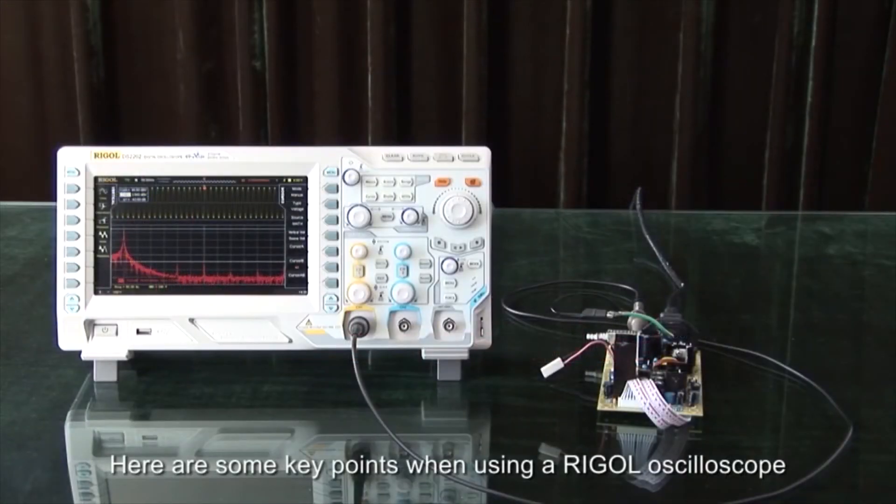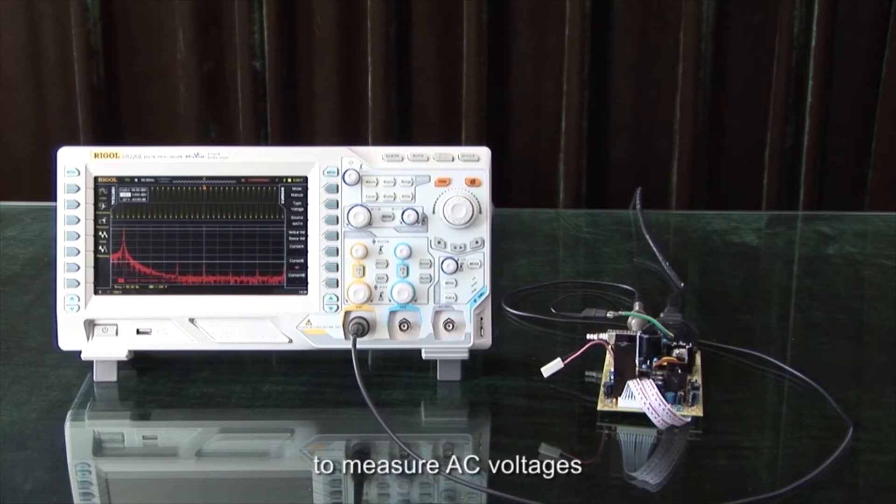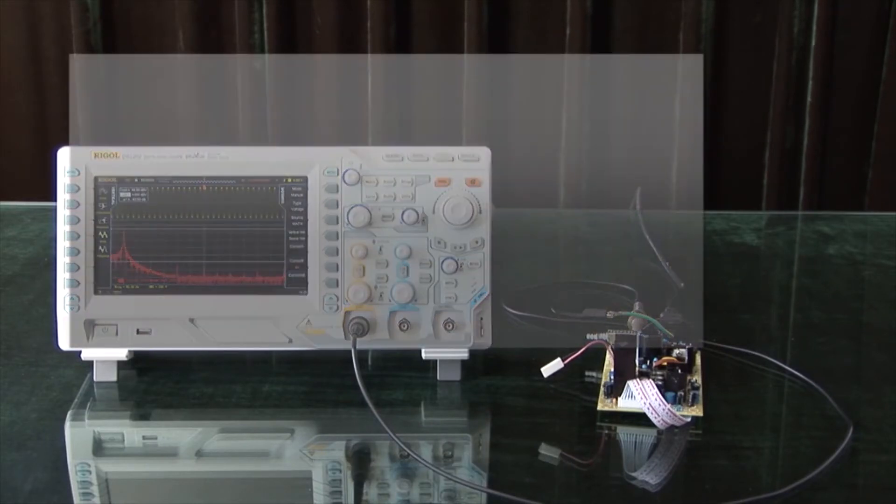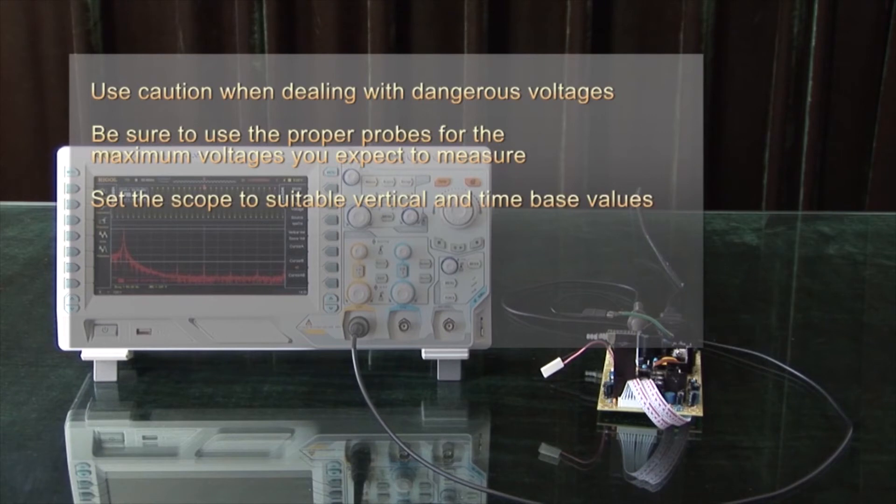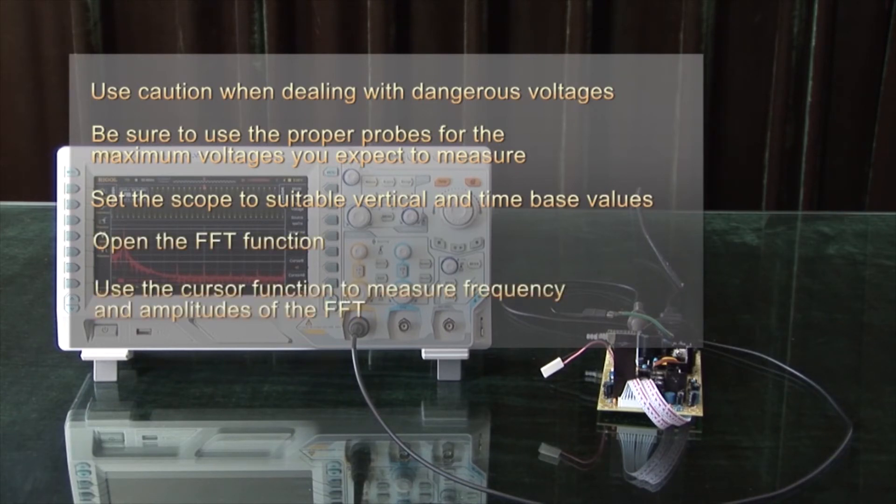Here are some key points when using a Rigol oscilloscope to measure AC voltages. Use caution when dealing with dangerous voltage. Be sure to use the proper probes for the maximum voltages you expect to measure. Set the scope to suitable vertical and time-based values. Open the FFT function and use cursor functions to measure frequency and amplitudes of the FFT.